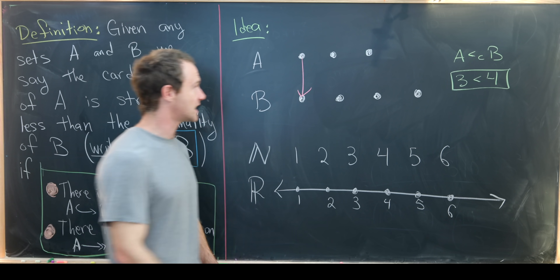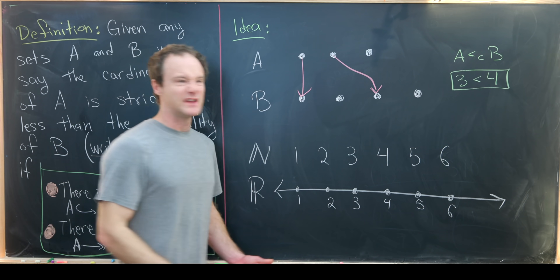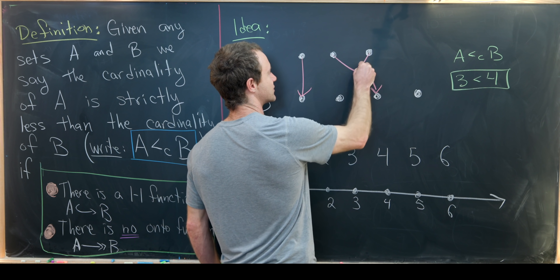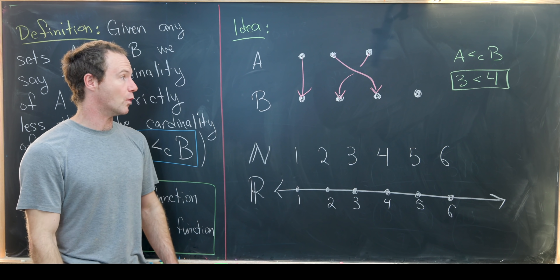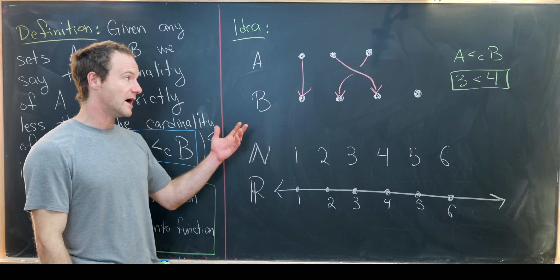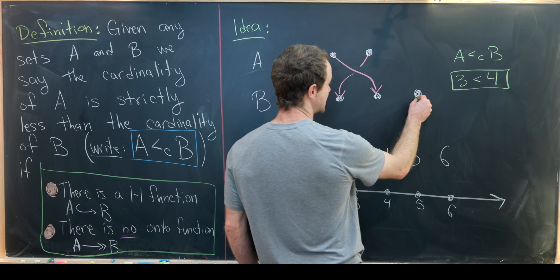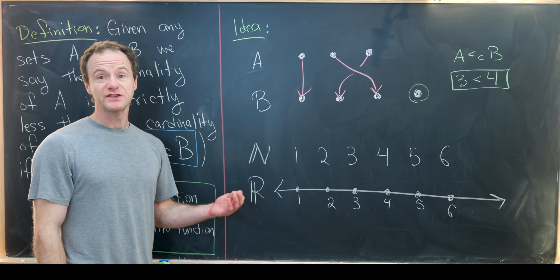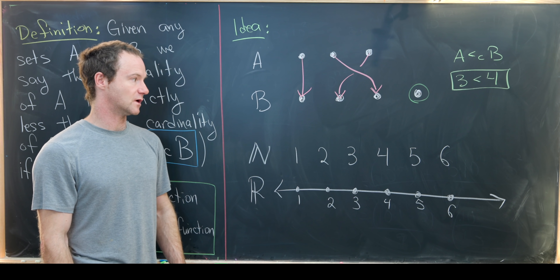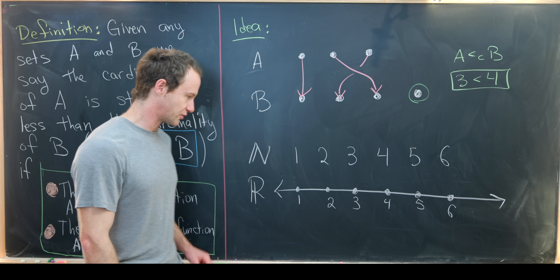We could take this first dot to this first dot, this second dot to this third dot, and this third dot to this second dot. That's most definitely a one-to-one function. But any one-to-one function that we build will not be onto, because we'll always miss this fourth dot. And if we had a non-one-to-one function, we would in fact miss even more dots.